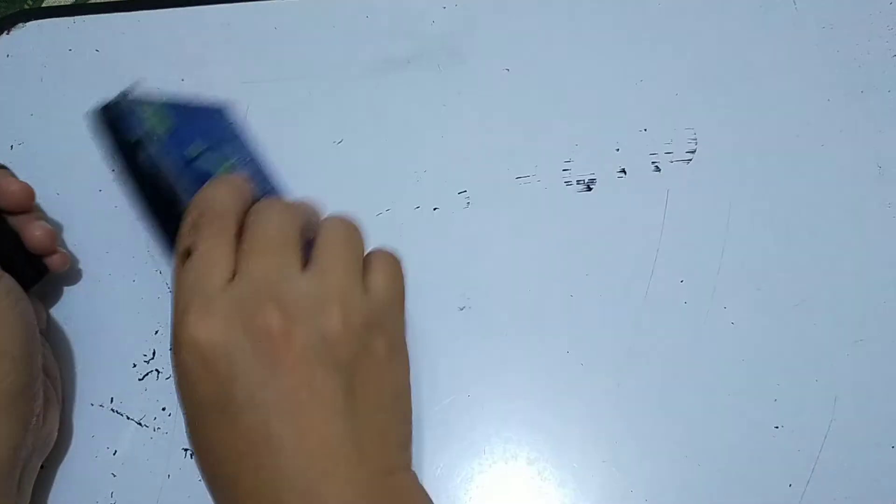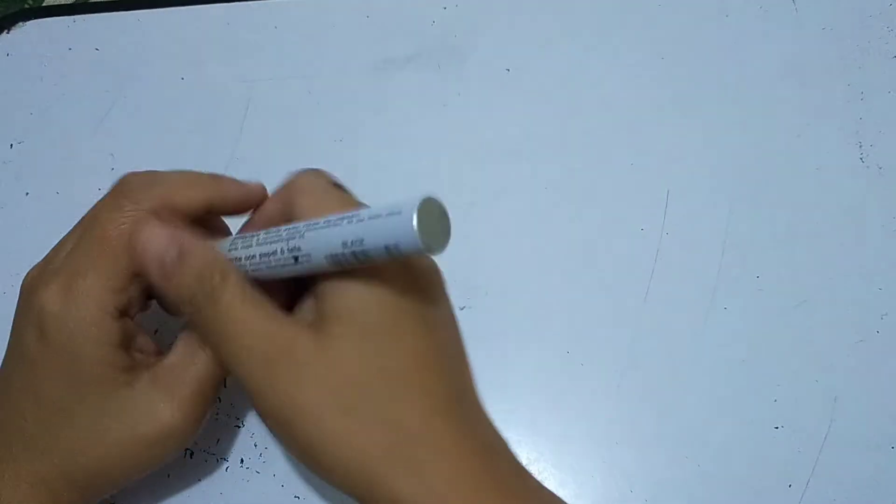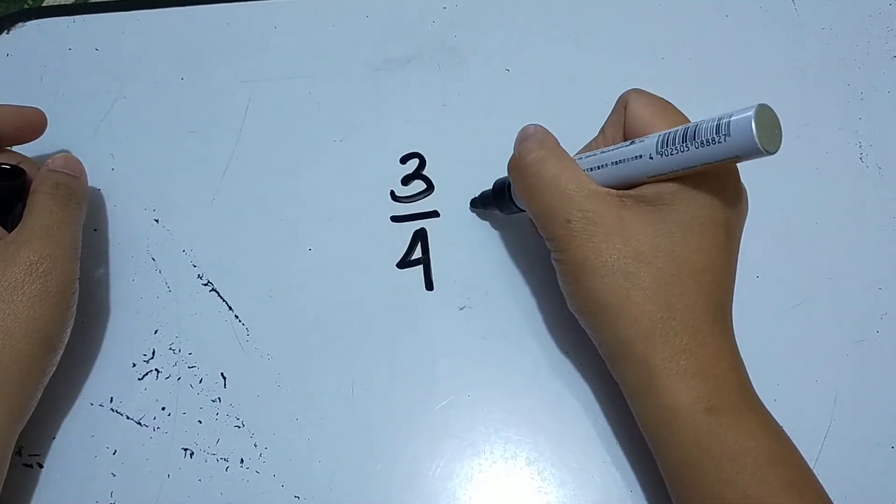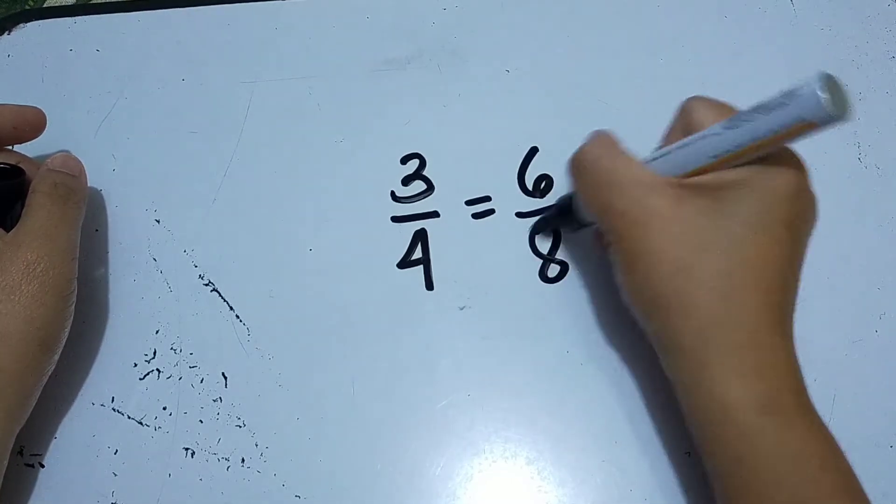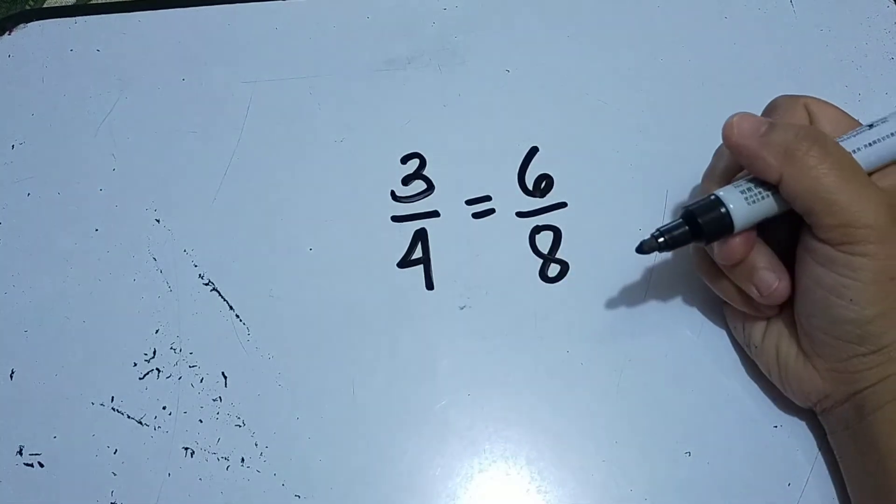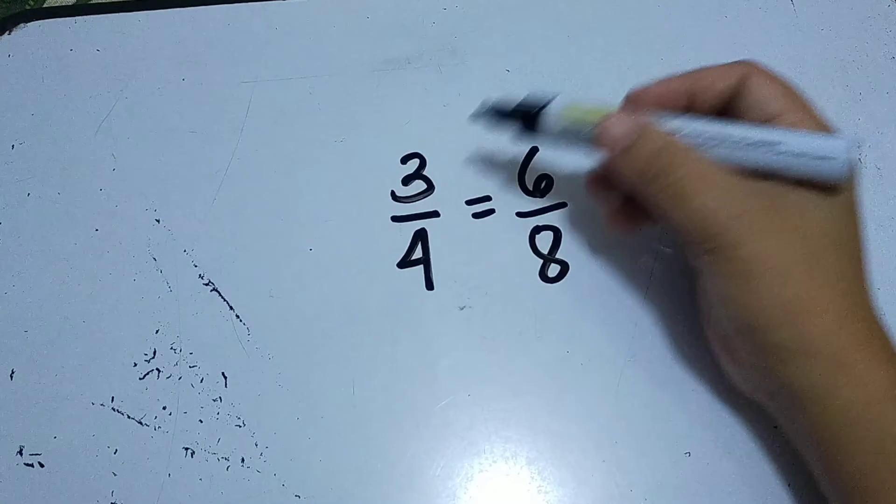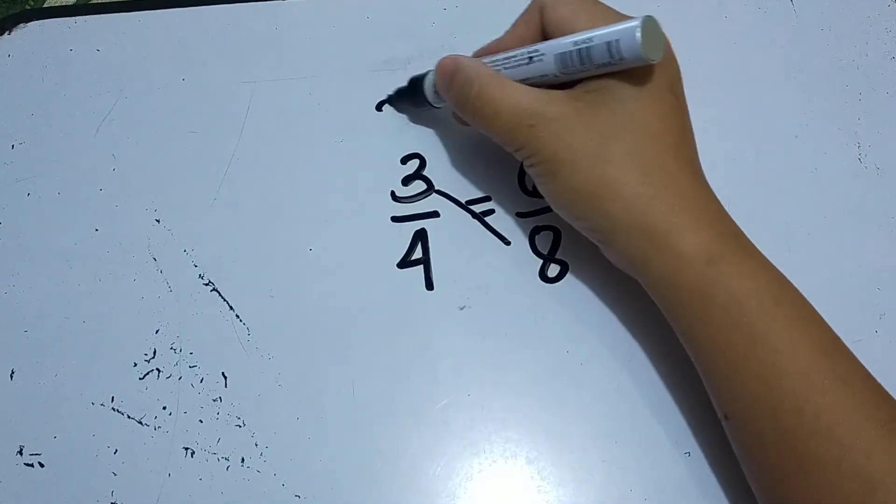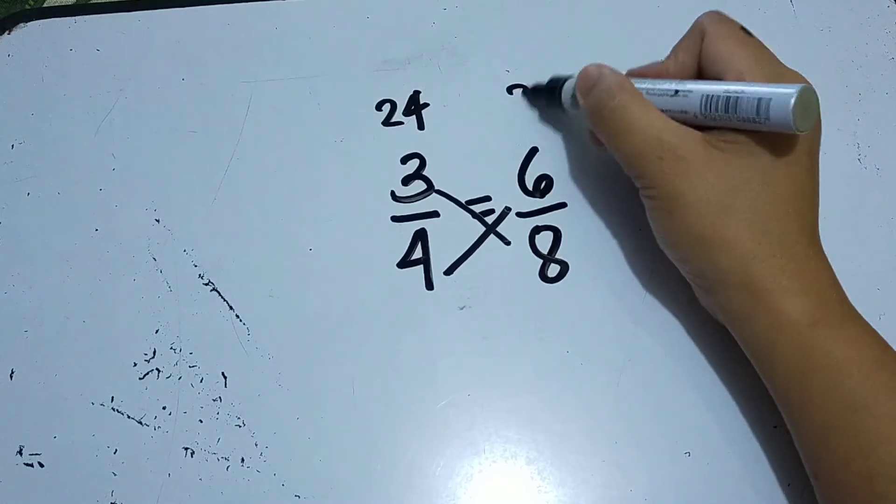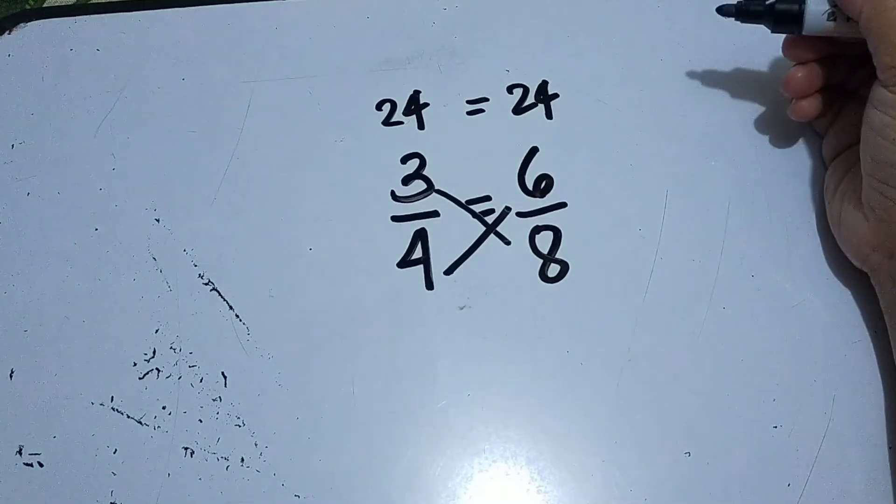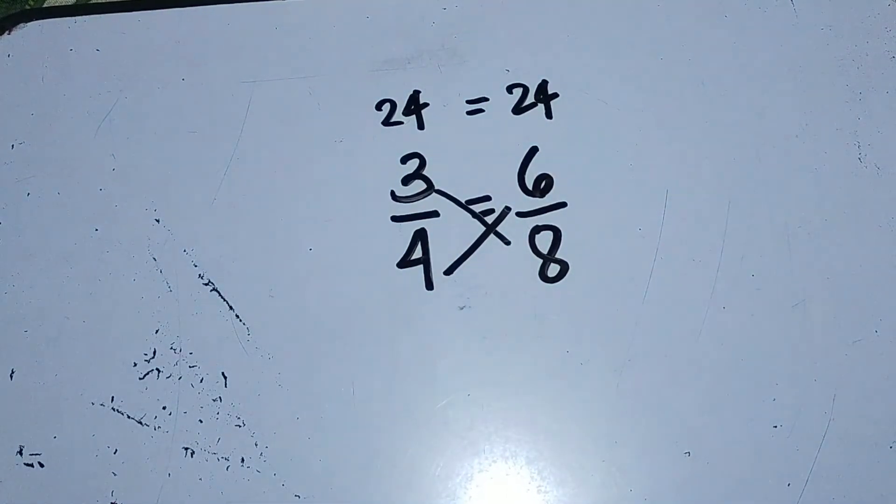Another. How about if you're going to identify whether the given ratios are equivalent or not? What's the process? So let's say, 3 over 4 is equal to 6 over 8. How do we justify if this is equivalent or not? By means of cross-multiplying. 3 times 8 is 24, 6 times 4 is 24. 24 is equal to 24. Therefore, this given is an equivalent ratio or equivalent fraction.